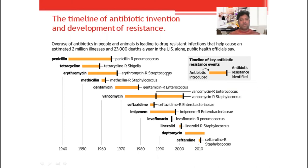Tetracycline was discovered in 1950 and the resistant strain Shigella was identified around 1965. Similarly, Erythromycin — a macrolide group drug — was introduced around 1953-1955, and the resistant strain Staphylococcus was identified around 1965-1967. Then Methicillin, the first synthetic penicillin group drug, was introduced in 1960, and right after three years, resistance was observed in Staphylococcus. Gentamicin, an aminoglycoside antibiotic, was introduced around 1967, and resistance was observed in Enterococcus around 1975-1977.